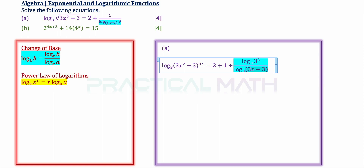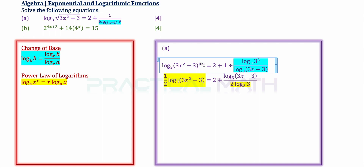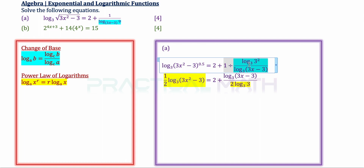Next, we apply the power law of logarithms. By the power law, log of x to the power of r to the base of A can be rewritten as r times log x to the base of A — the power shifts to the front as a product. So the power of 0.5 shifts to the front on the left side. On the right, we flip the fraction (take the reciprocal), and the power of 2 shifts to the front using the power law, giving us 2 times log 3 to the base of 3.